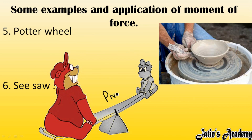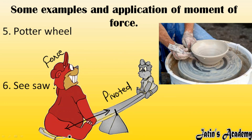Sixth application: the seesaw. The central point, or fulcrum, is the pivoted point. Force is applied at the ends, where the maximum possible distance from the pivot is available. Greater perpendicular distance means more turning effect, so even with less force the seesaw can turn easily.